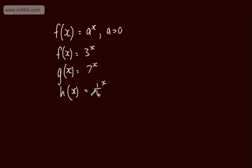E to the x is known as the exponential function. The number e is 2.718, correct to four significant figures. It was discovered by a mathematician called Euler, and it's what we call an irrational number. So like pi and like root 2, these are non-terminating, non-recurring decimals. So e is just a number — e is approximately 2.718.